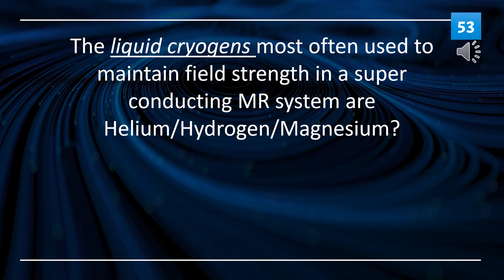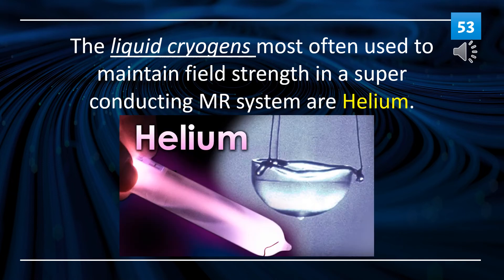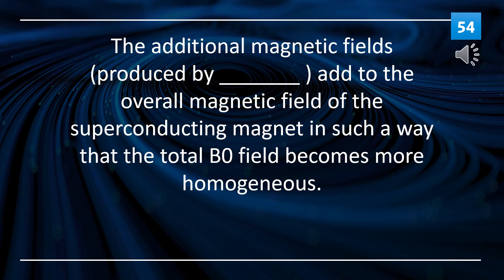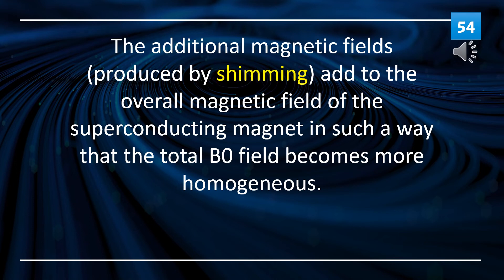The liquid cryogens most often used to maintain field strength in a superconducting MR system are helium. The additional magnetic fields produced by shimming add to the overall magnetic field of the superconducting magnet in such a way that the total B0 field becomes more homogeneous.